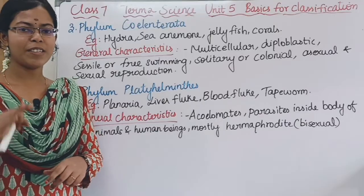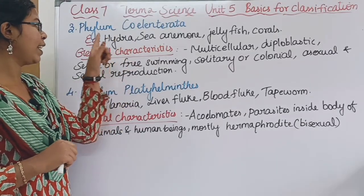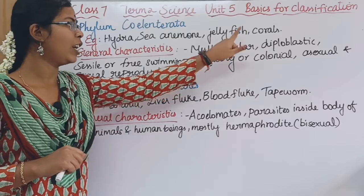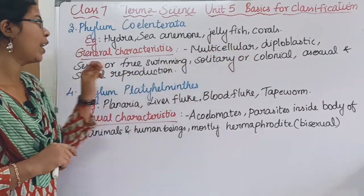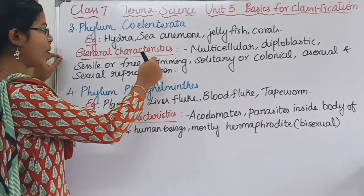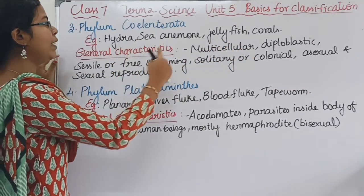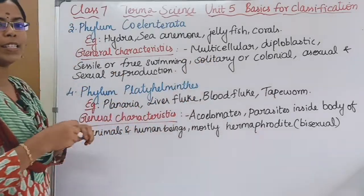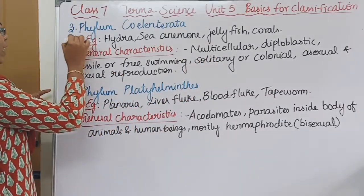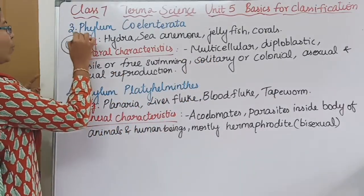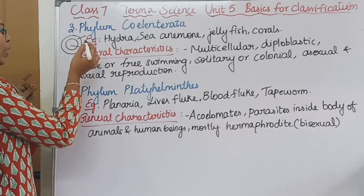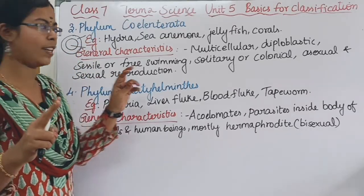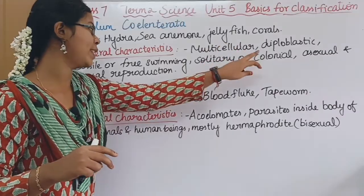The third division is Phylum Coelenterata. For example, Hydra, Sea Anemone, Jellyfish, and Corals. General characteristics: they are multicellular, made up of many cells. They are diploblastic — there are two cell layers: one is the ectoderm and one is the endoderm. So two layers are present.